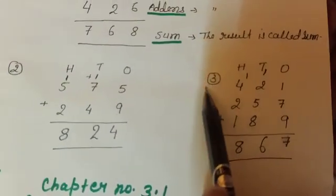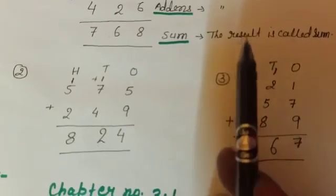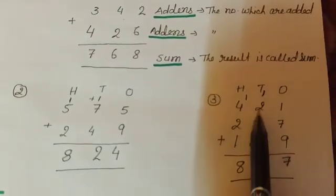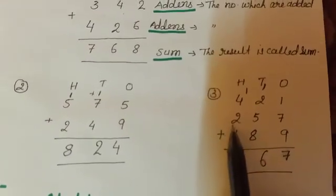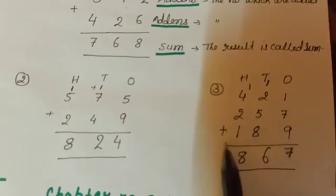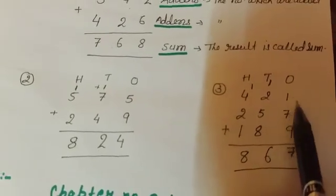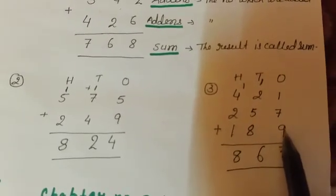See children, example number 3. It is little different from other three-digit numbers. So, 421 plus 257 plus 189. We add here 1, 7, and 9. The answer is 17.